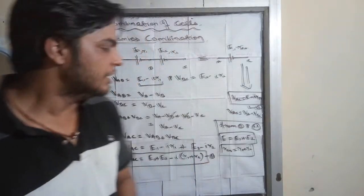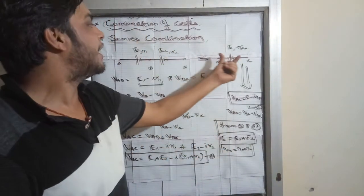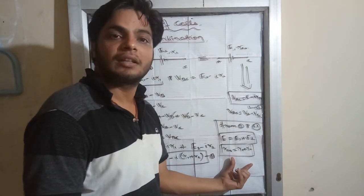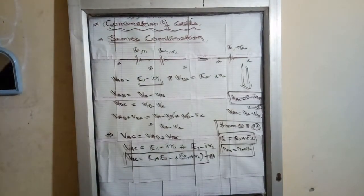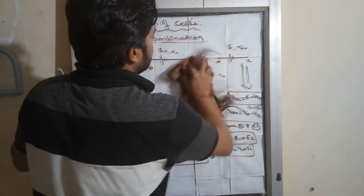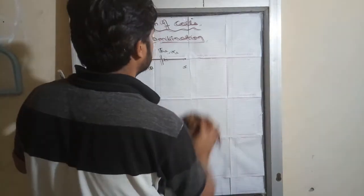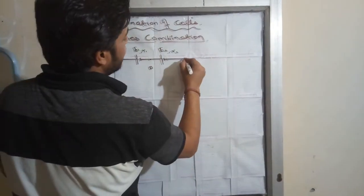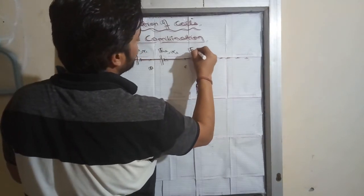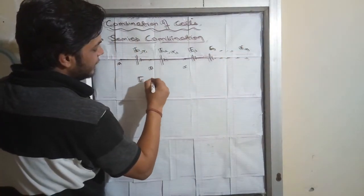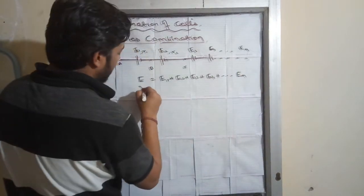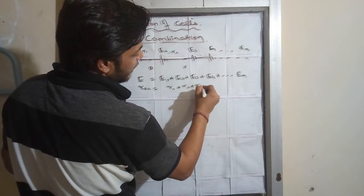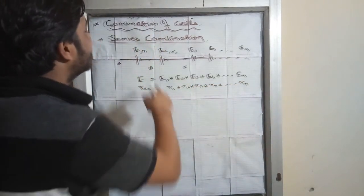Whenever two cells are connected in series, the equivalent EMF is E1 plus E2 and equivalent resistance is R1 plus R2. Now if n number of cells are connected — E1, E2, E3, E4, and so on till En — then the equivalent EMF is E1 plus E2 plus E3 plus E4 plus so on till En, and R equivalent is R1 plus R2 plus R3 plus R4 plus so on till Rn.